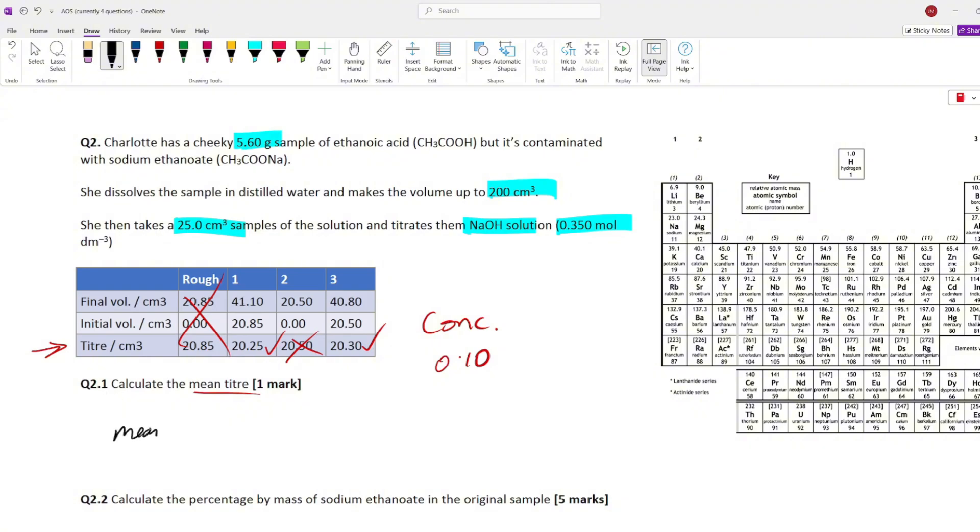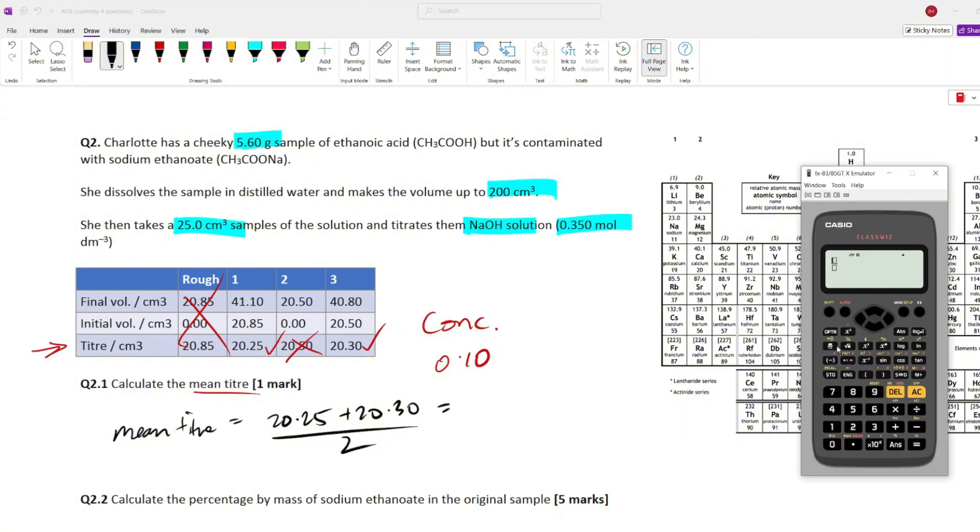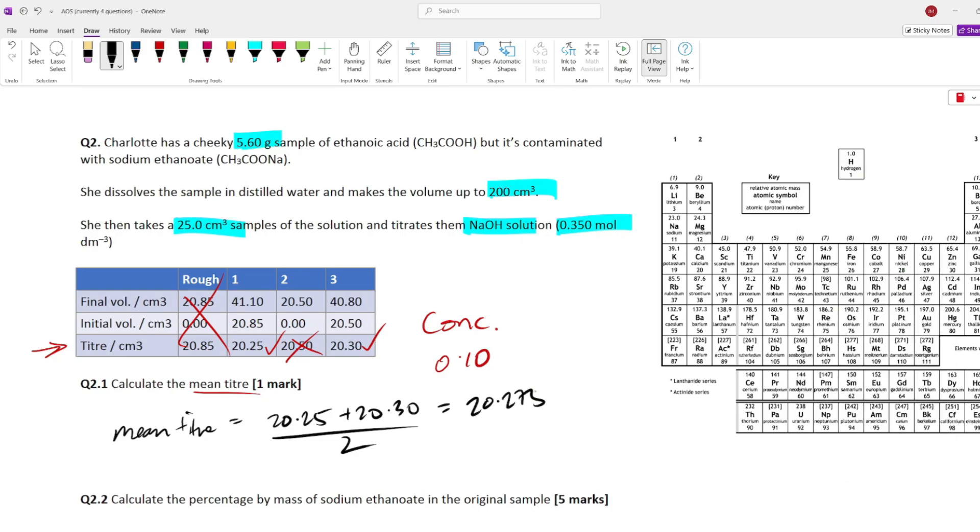So, our mean titer is just going to be 20.25 plus 20.3 divided by two. Let's get a calculator up. 20.25 plus 20.3, and that is divided by two. That gives us an answer of 20.275.